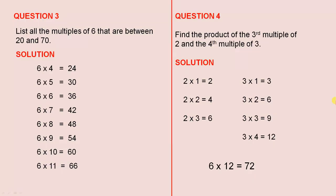Question 3: List all the multiples of 6 that are between 20 and 70. So here we have the 6 times tables. The first answer has to be greater than 20, and there it is: 6 × 4 = 24.